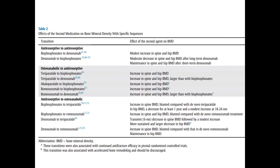For anti-resorptive to osteoanabolic sequencing: bisphosphonates to teriparatide leads to increased spine BMD, but this is blunted compared with de novo teriparatide. Hip BMD shows a decrease for at least one year, then a moderate increase at 18 to 24 months. Bisphosphonates to romosozumab increases spine and hip BMD, but again blunted compared with de novo romosozumab. Denosumab to teriparatide causes a transient six-month decrease in spine BMD followed by a moderate increase, with a more sustained and larger decrease in hip BMD.